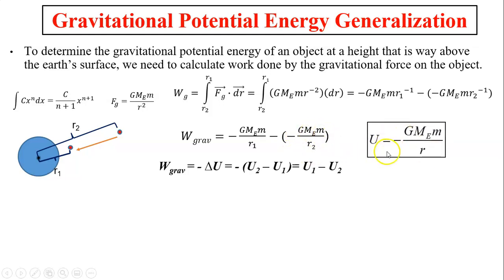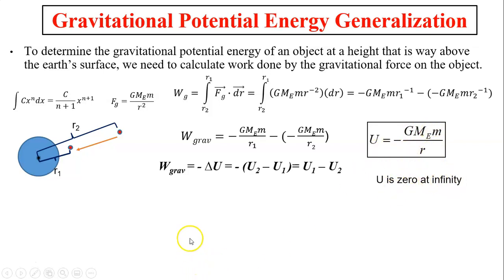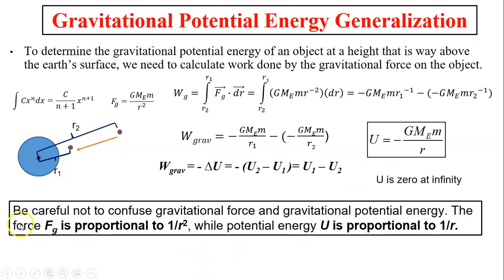Comparing with the expression that work done by gravity equals U1 minus U2: U1 equals negative GMe*m over r1, and U2 equals negative GMe*m over r2. So the U expression is negative GMe*m over r. From this equation, U equals 0 at infinity because anything divided by infinity equals 0. Be careful not to confuse gravitational force and gravitational potential energy — the force is proportional to 1 over r squared, while potential energy is proportional to 1 over r and it's negative.